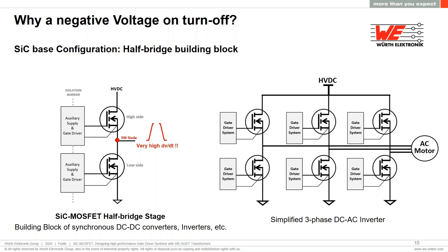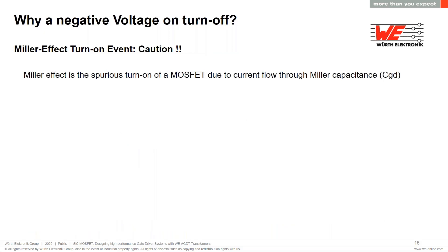Here for reference is a simplified example of a three-phase motor inverter built from three SiC MOSFET half-bridge blocks in parallel. This introduces the Miller effect, which may occur in these configurations. The Miller effect corresponds to the turn-ON of a MOSFET due to current flow through the Miller capacitance CGD.